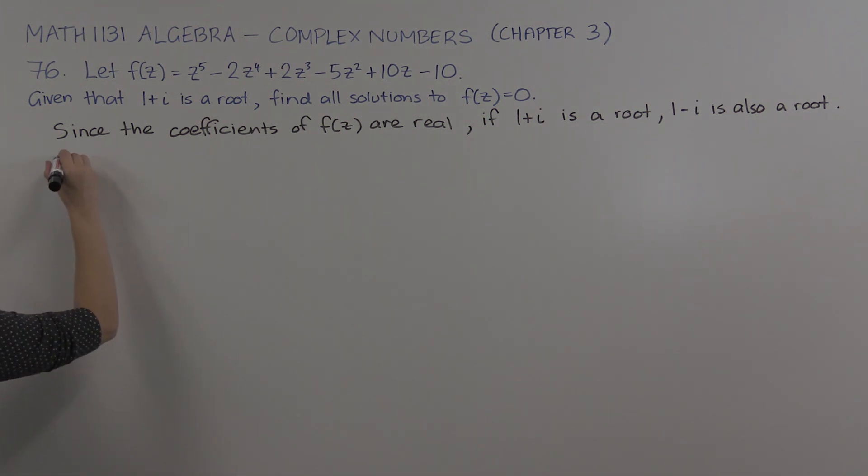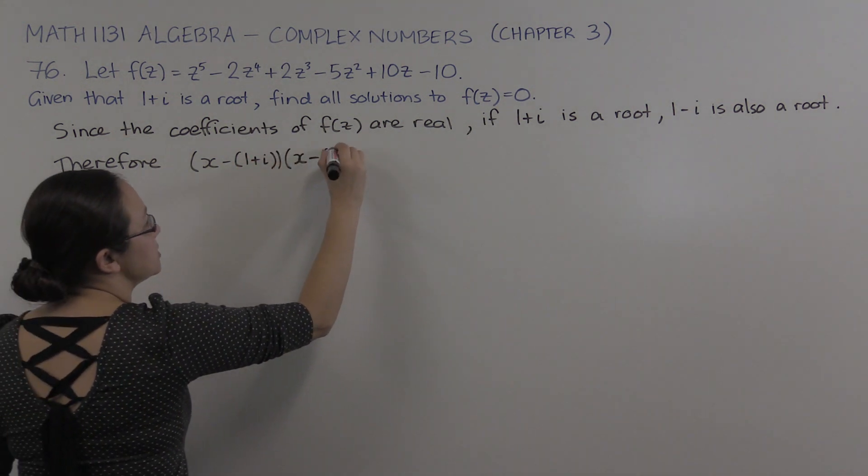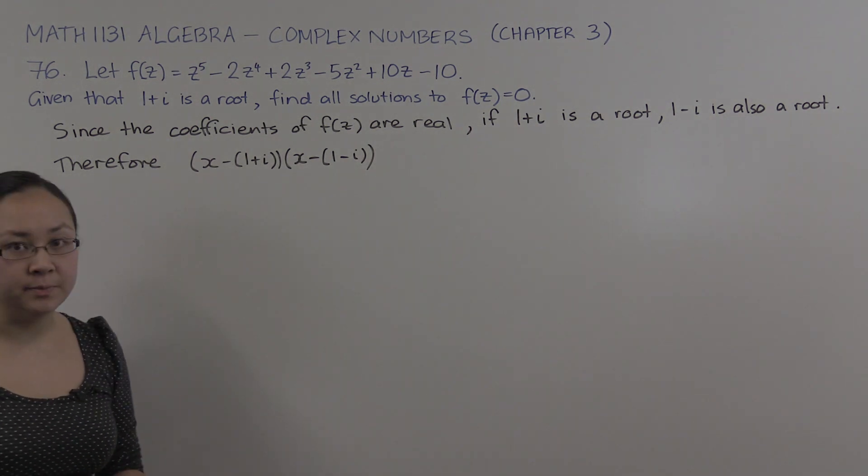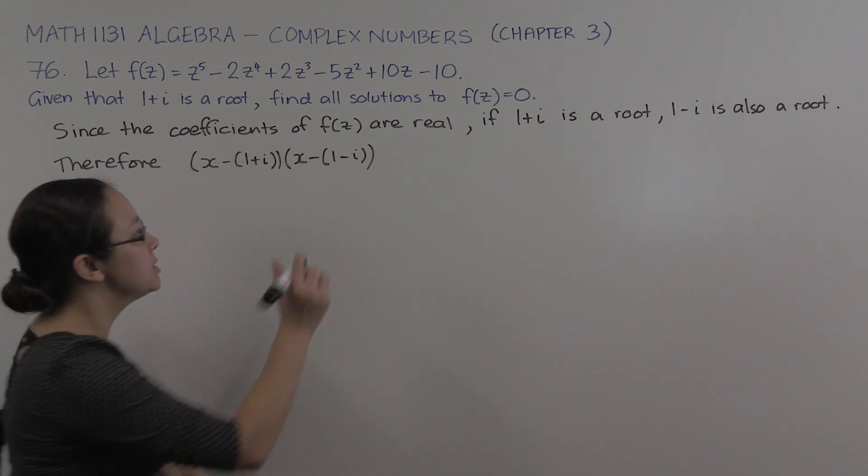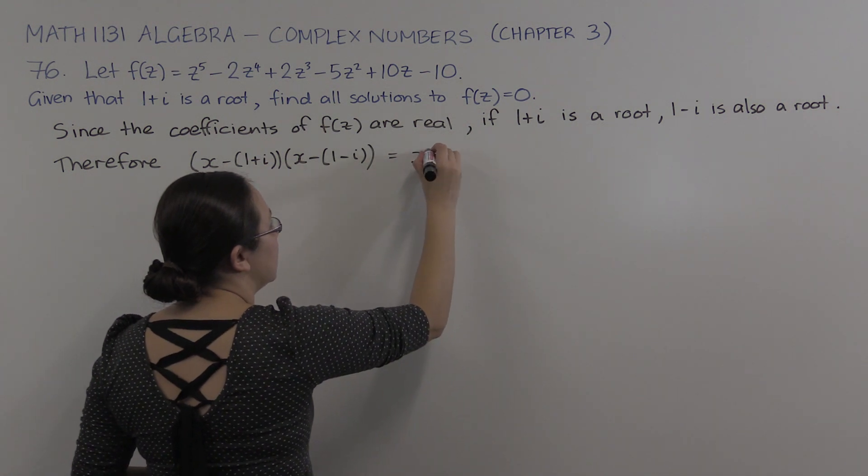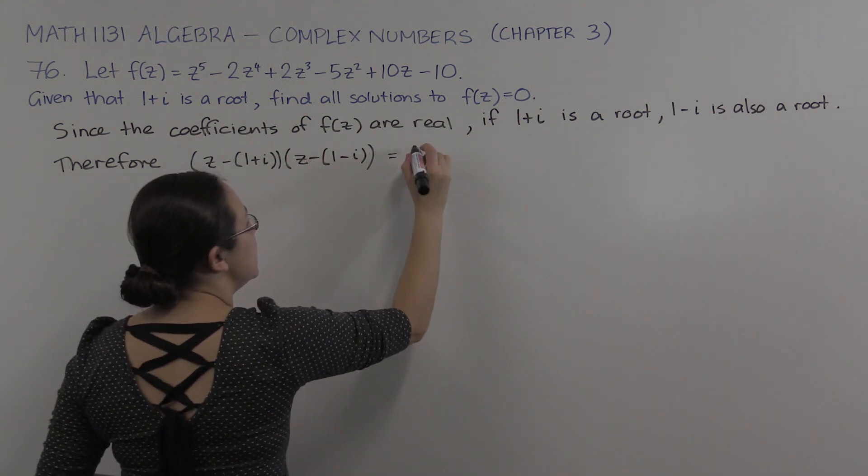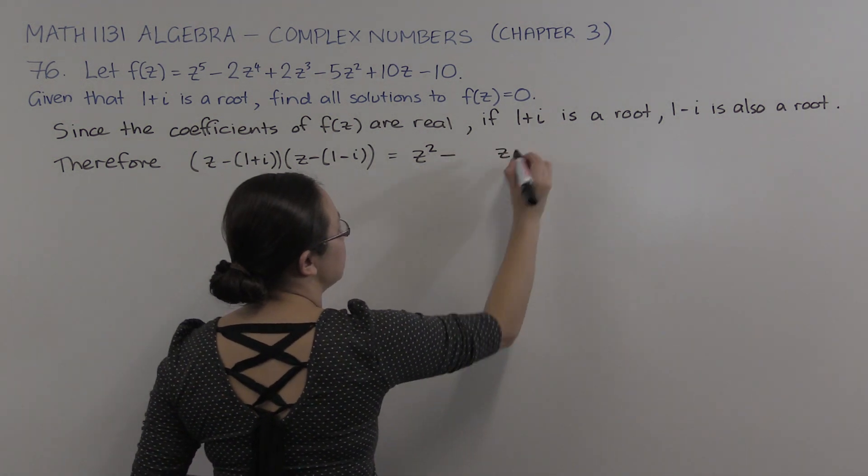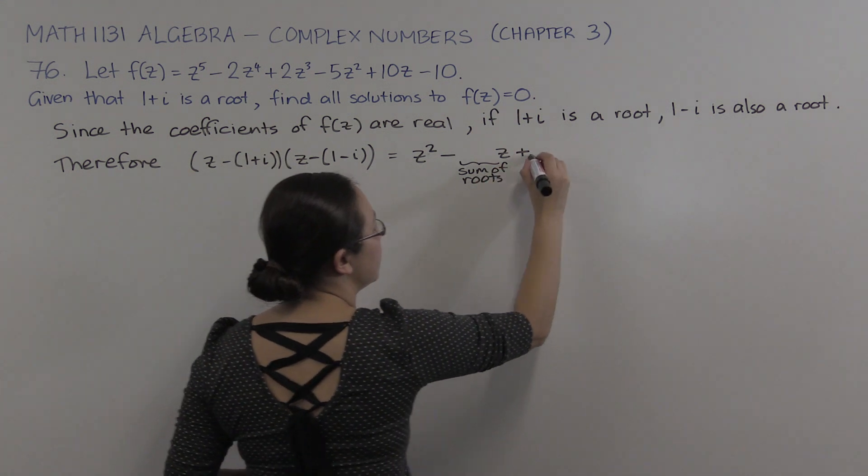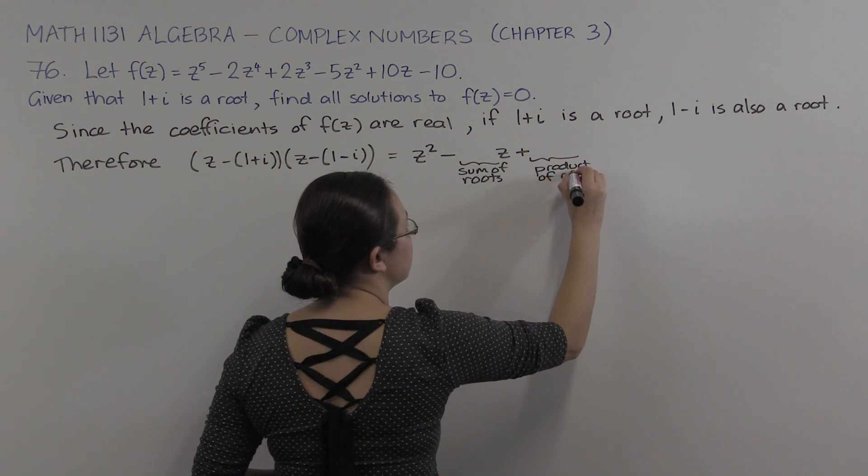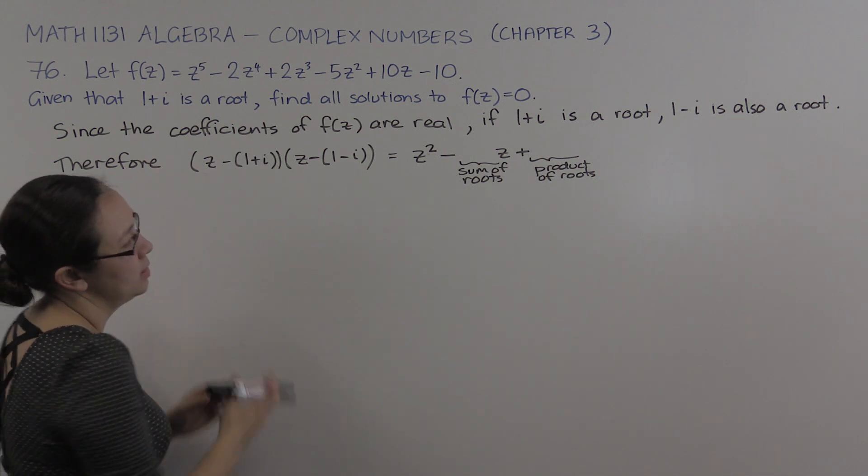So what we have then is that z minus (1 plus i) times z minus (1 minus i) is a factor of this polynomial f of z. So we have two complex conjugate roots and this quadratic is a factor. You can expand this and simplify it. Another way to do it just slightly quicker is to realize that this polynomial—and I should be using z's rather than x's otherwise we're going to get confused—this polynomial is z squared minus the sum of the roots times z plus the product of the roots. It's just a slightly quicker way of expanding it if you can see what the roots are.